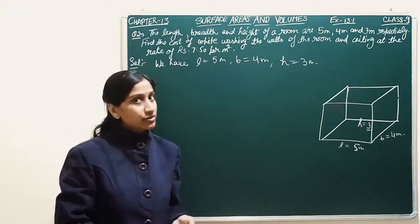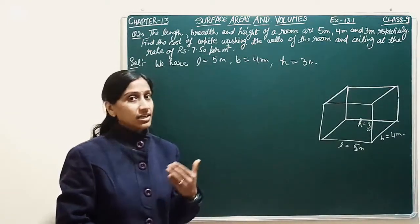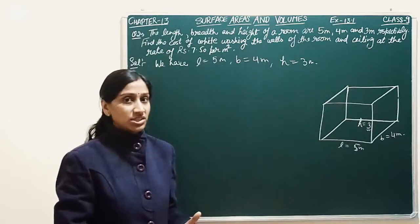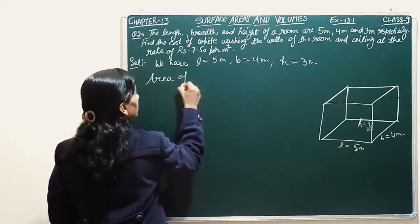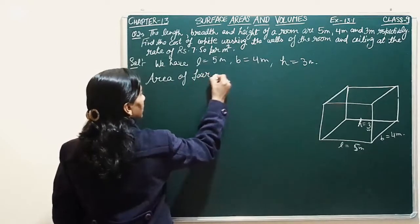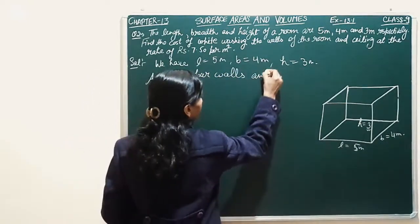Now we need to find the cost of whitewashing. We need to know the wall and ceiling area. So, area of 4 walls and ceiling.